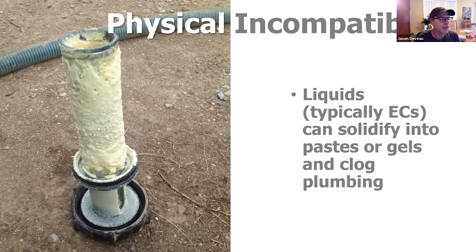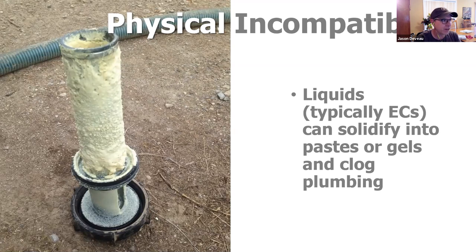Physical incompatibility is the fun stuff — it's where you get to see what's in your tank change shape. Unless it happens to you, then it stinks. Liquids, typically emulsifiable concentrates, can solidify into toothpaste or gelatinous forms. What you're looking at is actually a filter, not a candle — and that's what happened here. The emulsifiable concentrates, partially due to an agitation issue, completely solidified into this gloop. And when that happens, every filter on your sprayer, every nozzle can just get coated and clogged with this stuff.